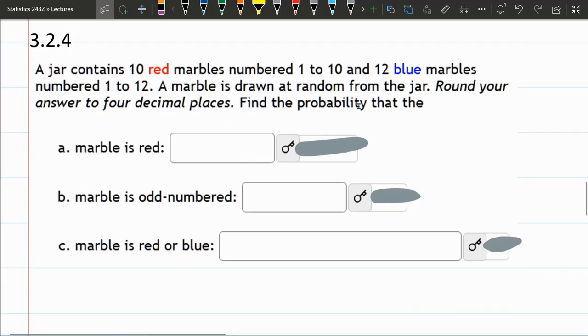So now we have a jar with 10 red marbles numbered 1 to 10, 12 blue marbles numbered 1 to 12. A marble is drawn at random from the jar. They want decimals here, not fractions.